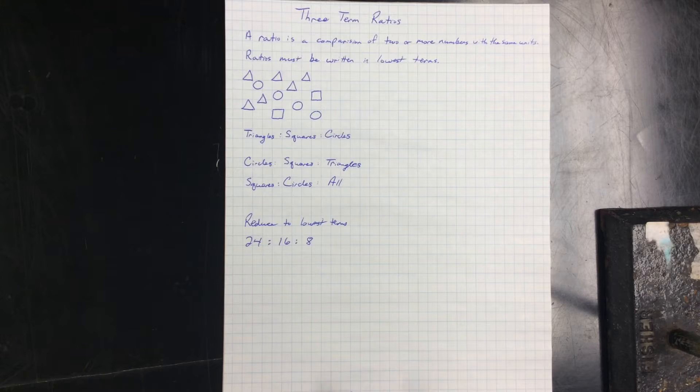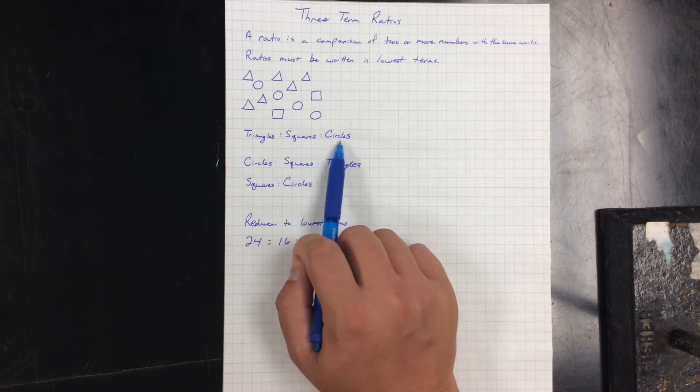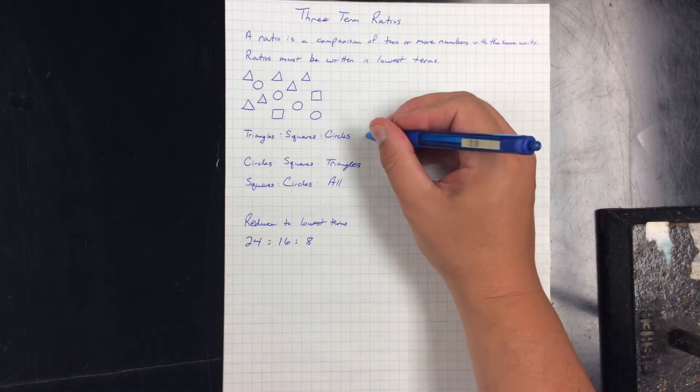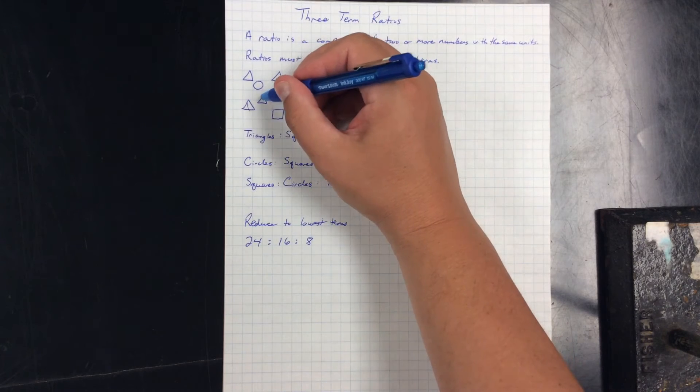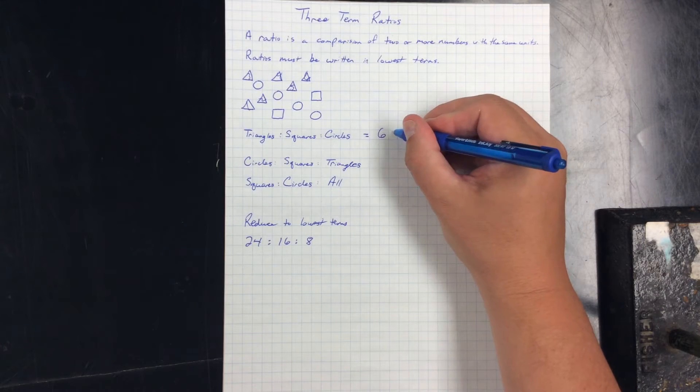We have a diagram here with different shapes in it. We're going to look at triangles to squares to circles. So triangles, I've got one, two, three, four, five, six. So do that number first.